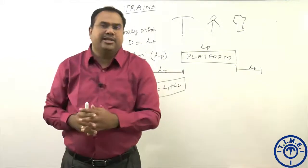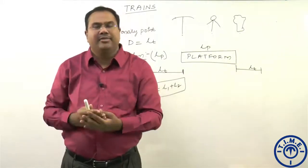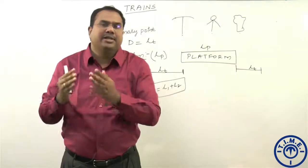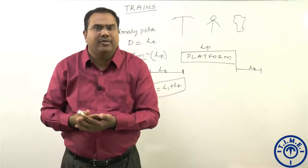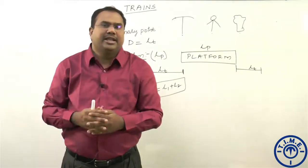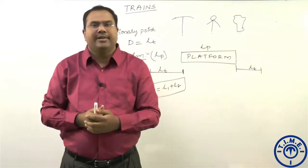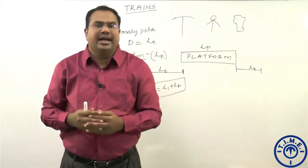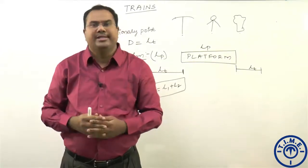To summarize the basic concepts: when a train crosses a stationary point, the distance covered is the length of the train. When crossing a platform, the distance is the length of the train plus the length of the platform. When two trains cross each other, the distance covered is the sum of both their lengths, L1 plus L2.